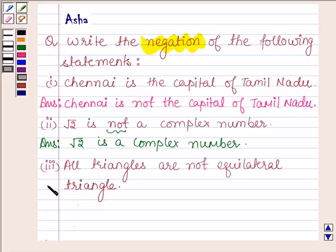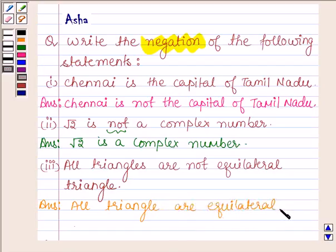Let's move on to the third part. It says, all triangles are not equilateral triangles. Now the negation of this statement will be, all triangles are equilateral triangles.